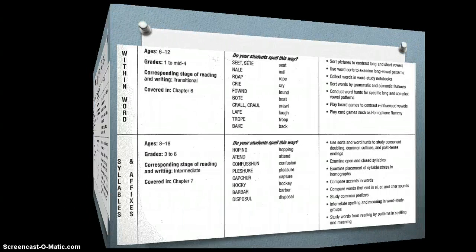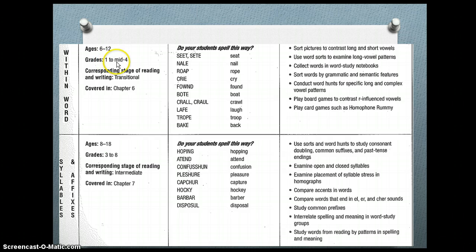Then we move on to the within-word stage, ages six to twelve, grades one through fourth. Students are starting to learn long vowel and irregular vowel spelling patterns, but may over-apply magic E to every word with a long vowel. They start to include patterns or chunks of letter sequences. Within-word is also called transitional because students are transitioning from the alphabetic layer to the meaning layer of English orthography. Within this stage, they first study common long vowel patterns and then move to less common patterns.